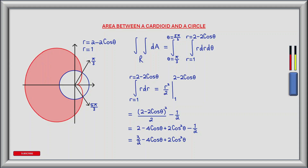Now we've formulated our double integral we can begin the evaluation process. Starting with the inner integral, we integrate r dr between r equals 1 and r equals 2 minus 2 cos theta. The antiderivative of r with respect to r is r squared divided by 2, evaluated between 1 and 2 minus 2 cos theta. Plugging in the upper limit gives (2 minus 2 cos theta) all squared divided by 2, and subtracting the lower limit gives minus 1 half.